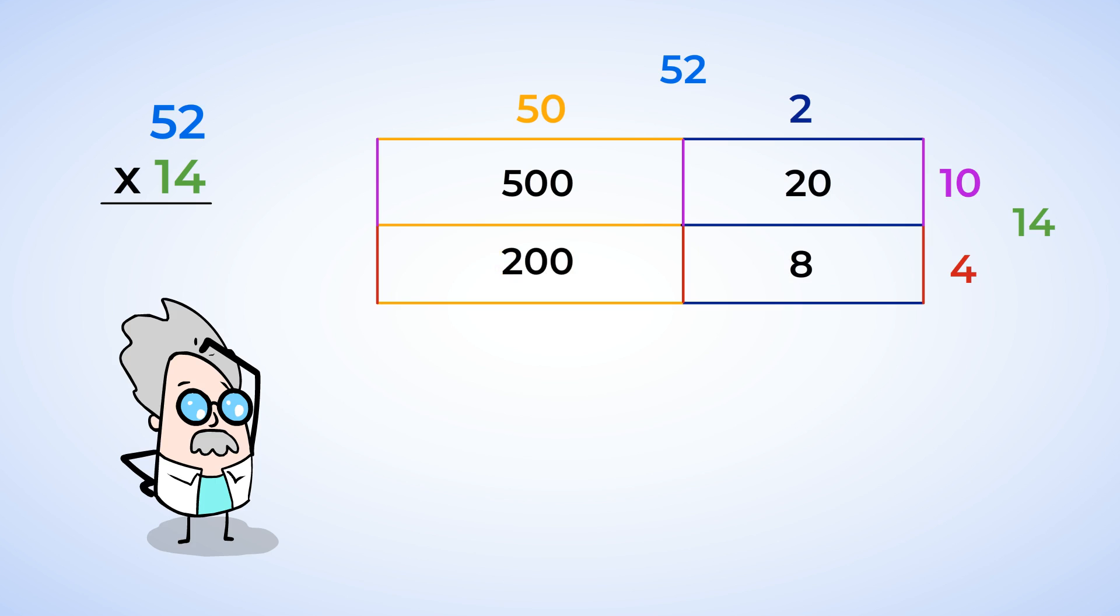Okay, next we add all of the values together to get the final product. 500 plus 20 is 520. 520 plus 8 is 528. 528 plus 200 is 728. Our final answer of 52 times 14 is 728.